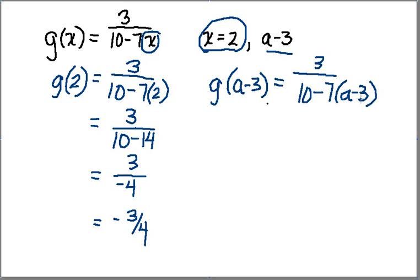All I did was plug in a minus 3 for x. In this particular case, I have 10, and now I'm going to distribute this 7. The way I distribute it is multiply every single thing in parentheses by this negative 7. So first, I get negative 7 times a, which is going to give me a negative 7a.